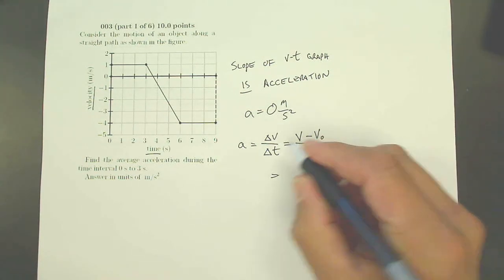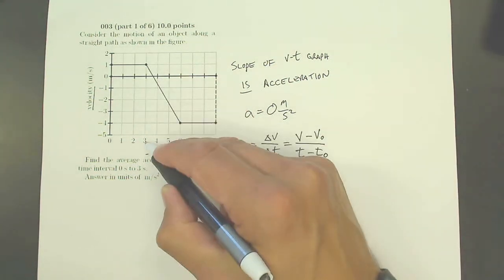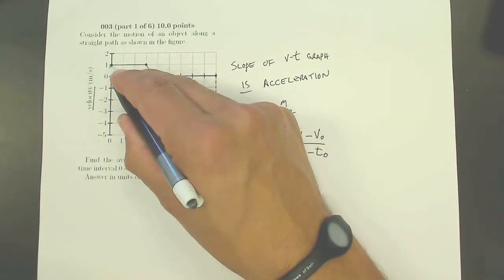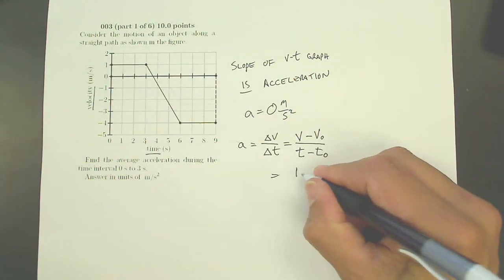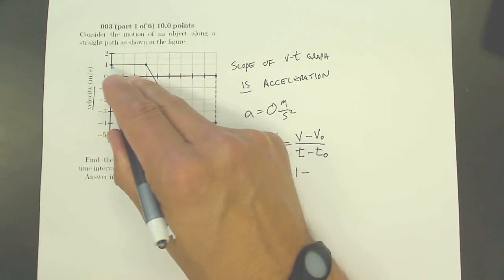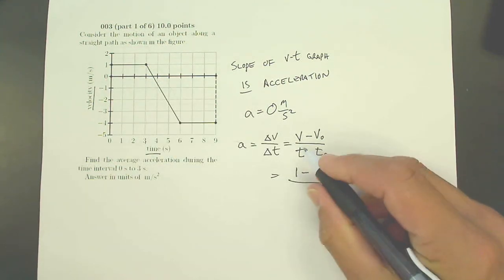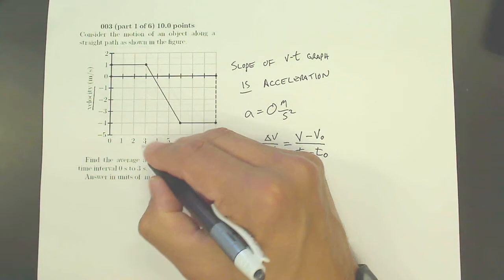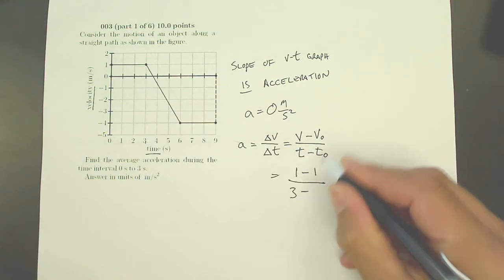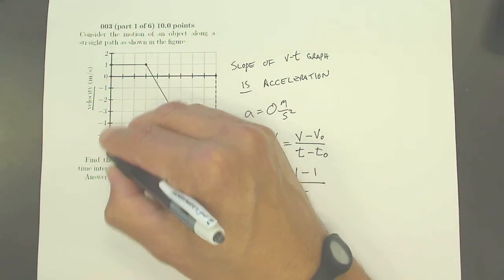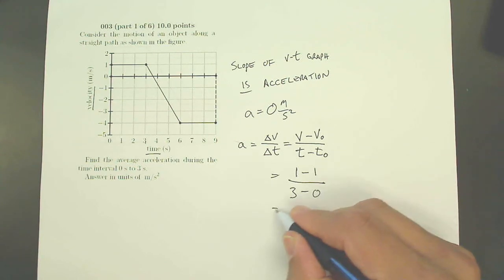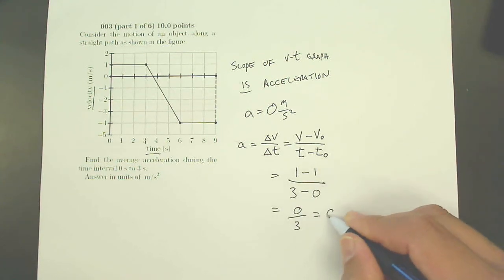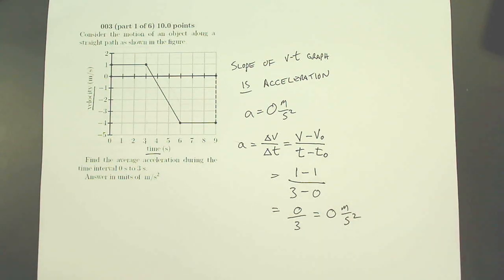In this case, reading off the graph at 3 seconds, my final velocity is 1 meter per second minus my initial velocity of 1 meter per second, divided by my final time of 3 seconds minus my initial time of 0 seconds. So that's going to give me 1 minus 1, that's 0 over 3, which is again 0 meters per second squared.